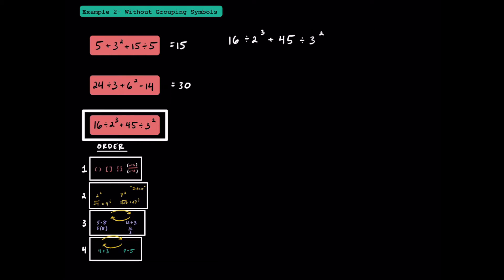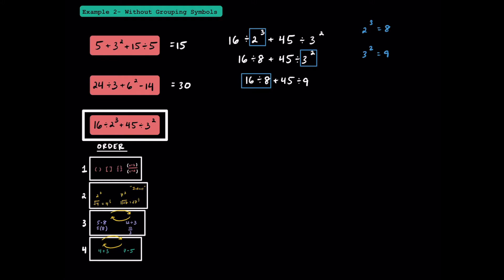Let's try one more of these types. Notice how we have two different exponents, but we're going to do the one on the left because it comes first. This 2 cubed is really just 2 times 2 times 2, and that's equal to 8. Since we still have an exponent, let's solve that next. This 3 squared is really 3 times 3, and that's equal to 9. We have two division problems, but we're going to solve the one on the left first. 16 divided by 8 is going to be 2. Next, we're going to divide 45 by 9, and we could write 2 plus 5, and 2 plus 5 equals 7. That's the answer to this third one.